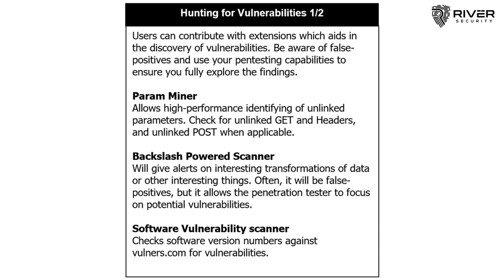The Software Vulnerability Scanner is also useful. It's a naive tool that simply looks for version numbers — if it sees IIS version 8.5, it submits that to vulners.com and gets a list of known vulnerabilities for that version. It safeguards the pen tester from missing obvious version-based vulnerabilities. Keep in mind there are false positives, and not all vulnerabilities found will actually be exploitable.